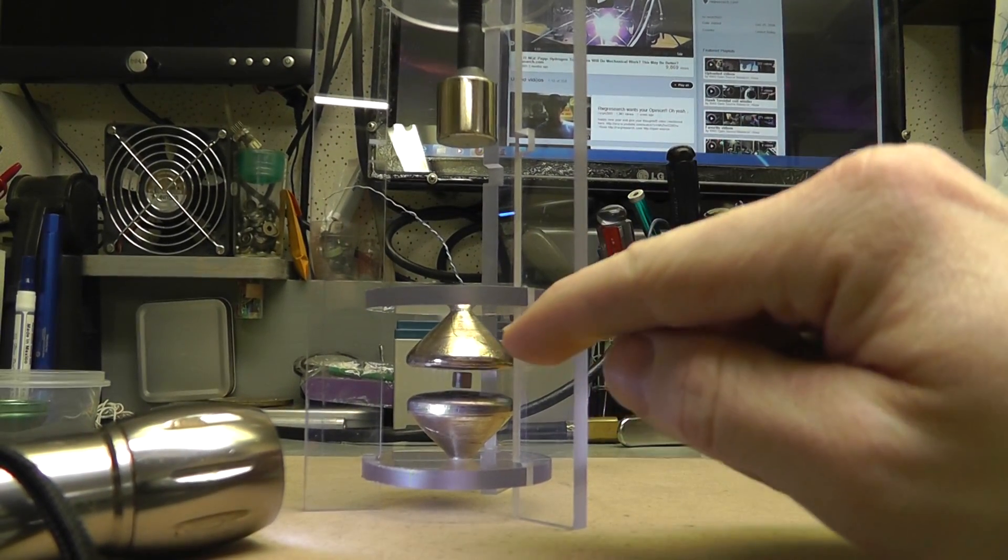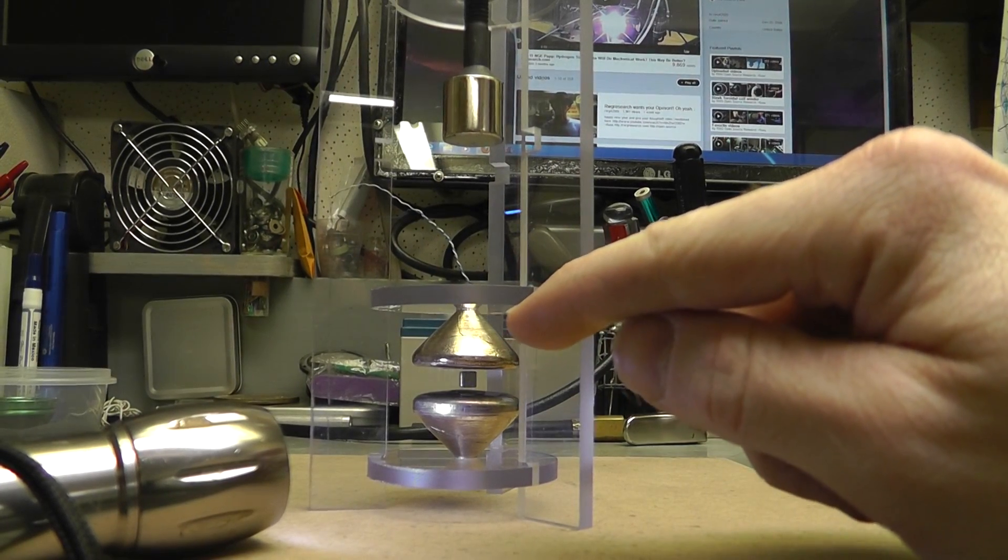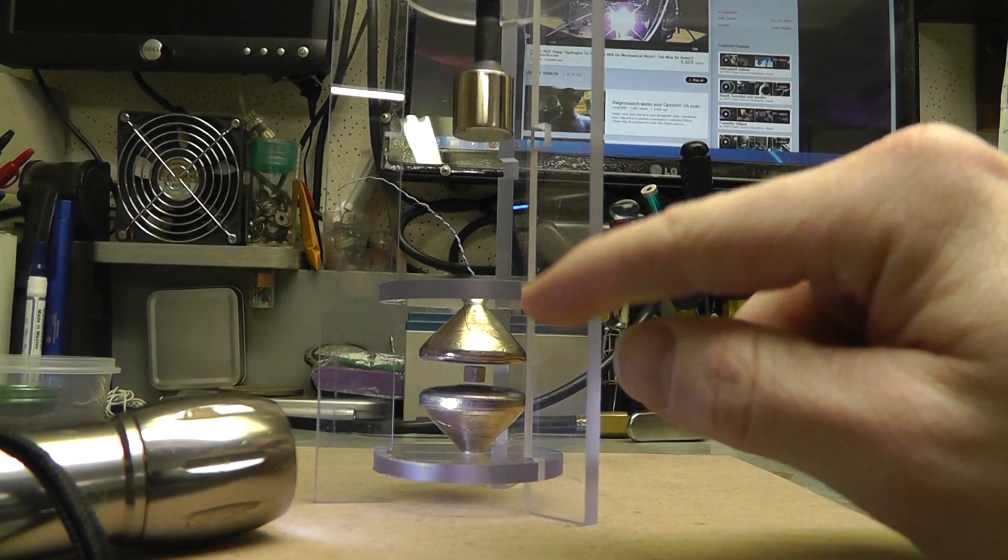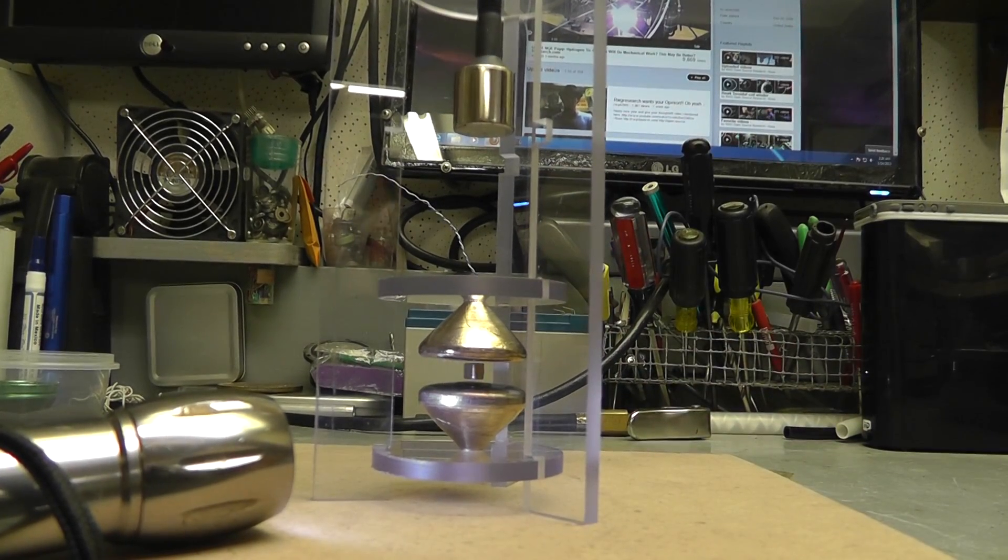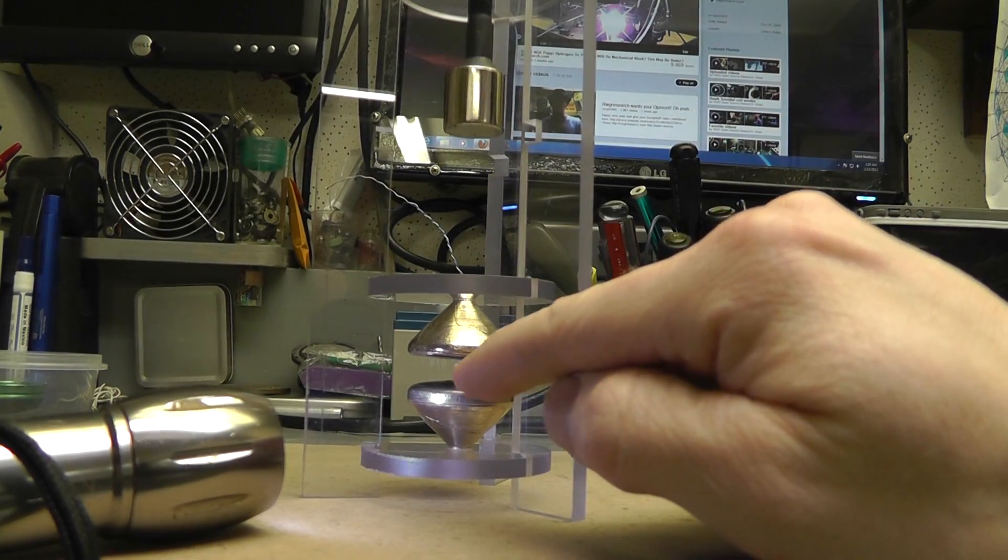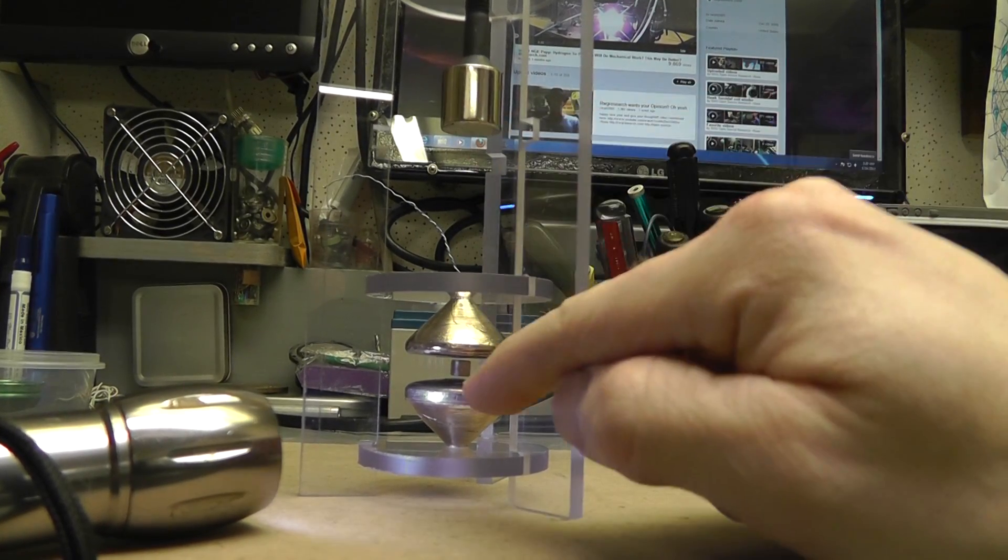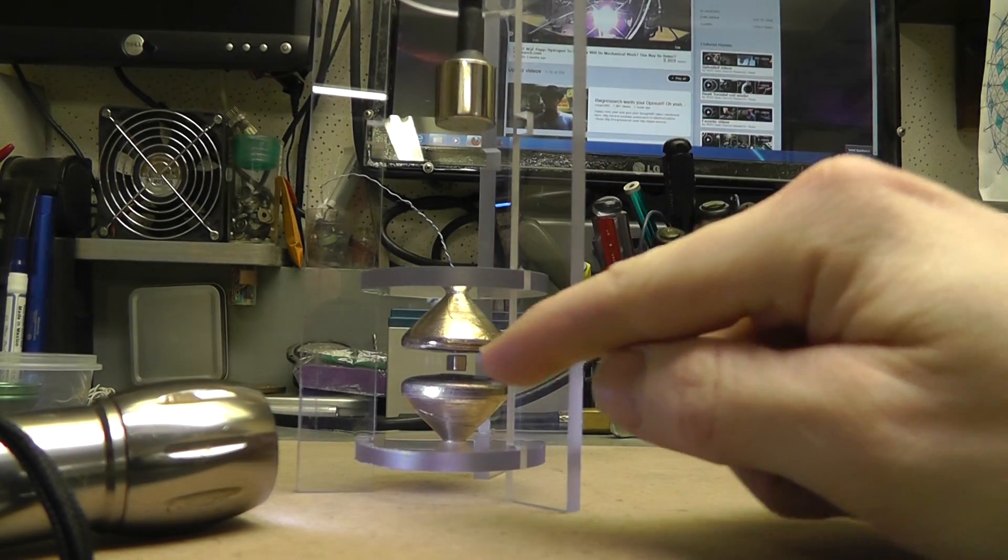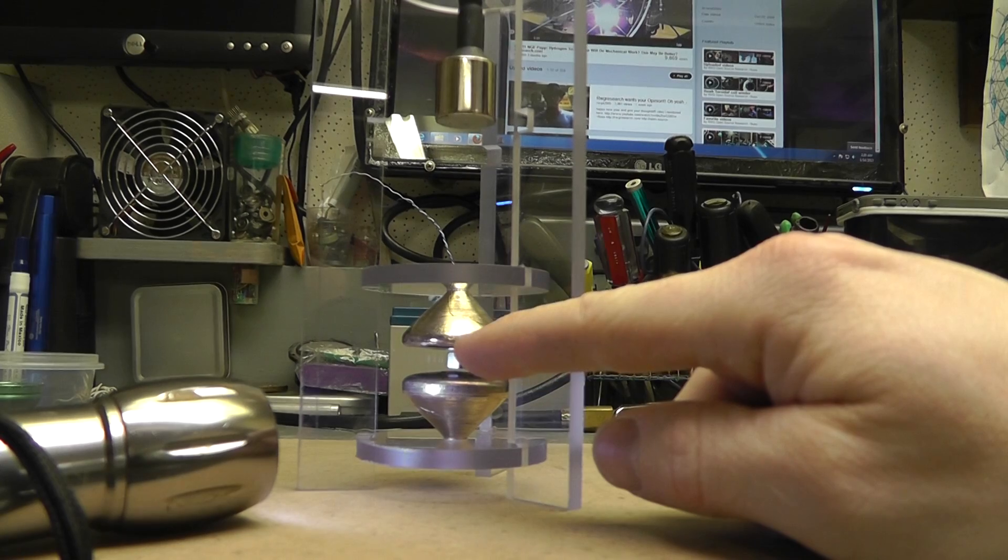They actually use it in shotgun shells for duck hunting or something, so you don't poison the water with lead or something. I think is actually what they use it for. But what's happening is this weight is being pulled, or I'm sorry, the magnet is holding the weight of the little magnet through magnetism.